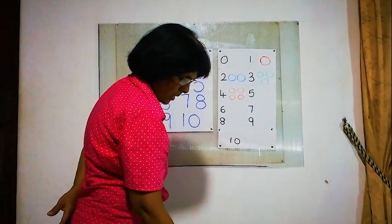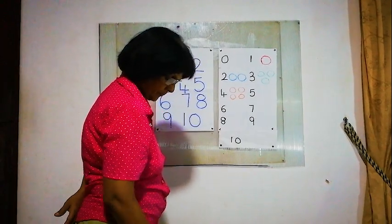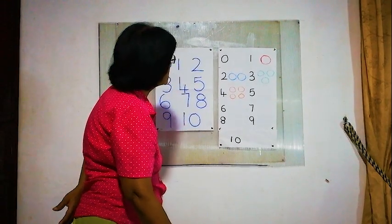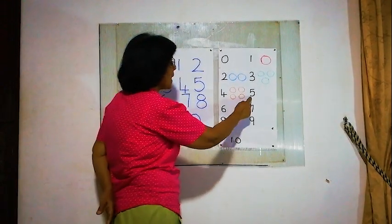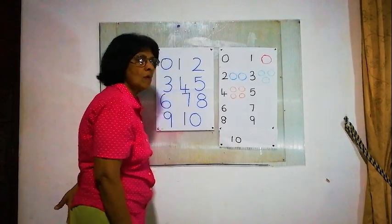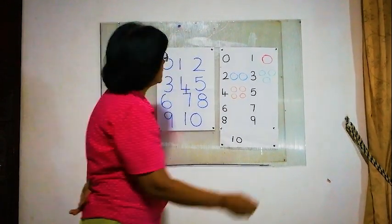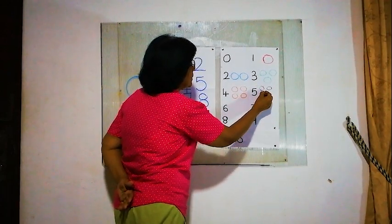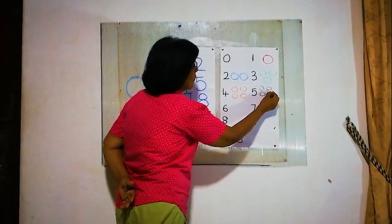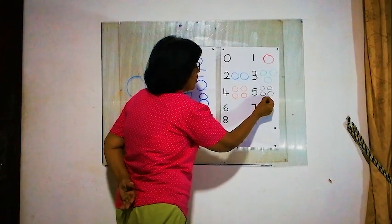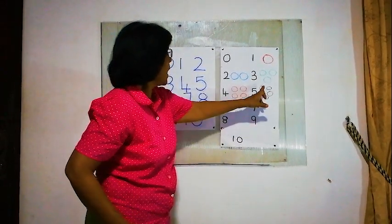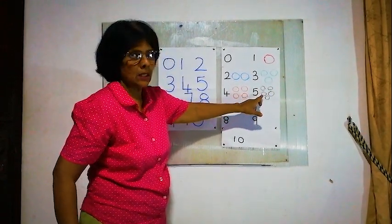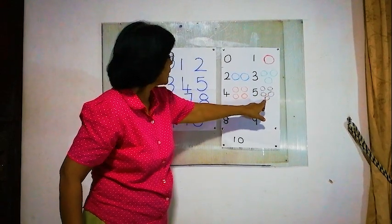Now, next one. We have to draw the next number 5. For 5, we have to draw 5 balls, right? We will count and draw: 1, 2, 3, 4, 5. 5 balls — is it correct? Yes. For 5, 5 balls.